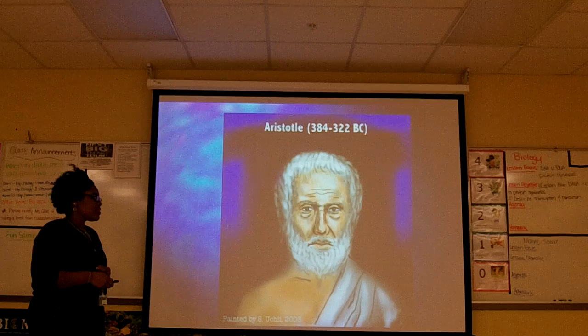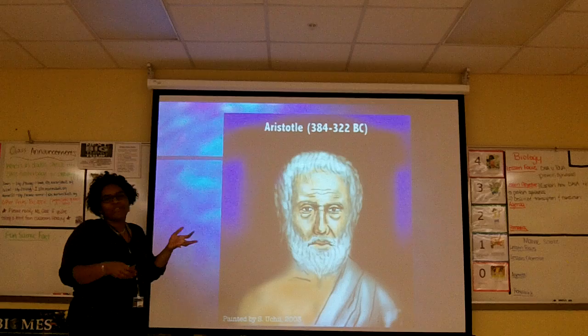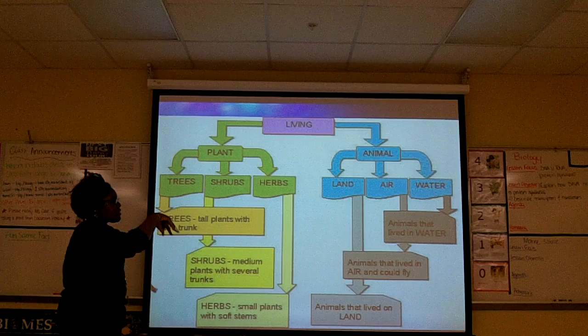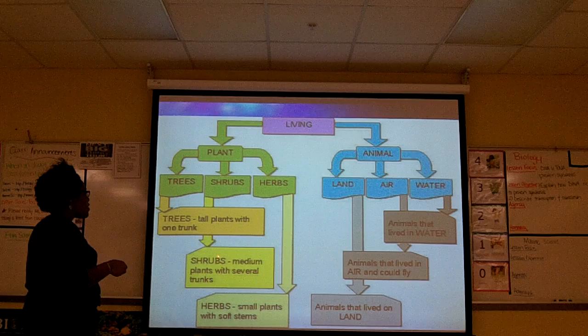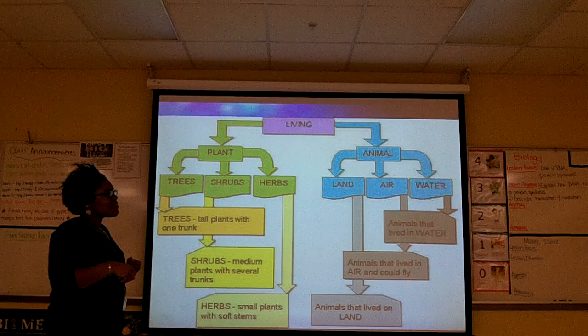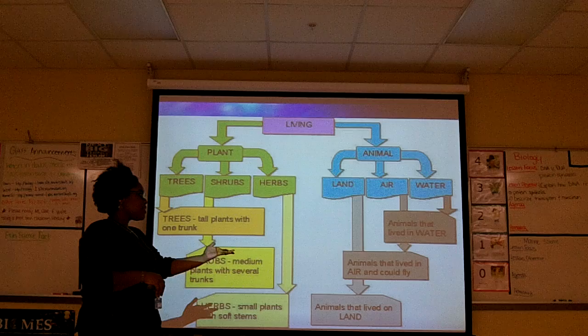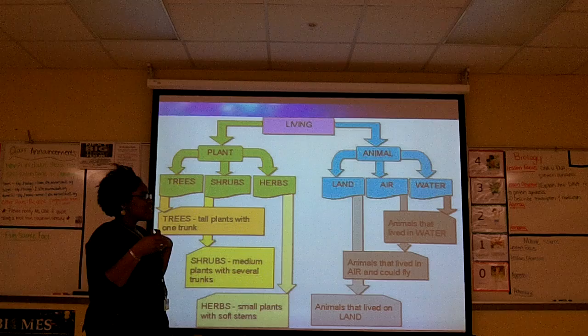Looking at Aristotle's classification: everything was 'living.' He had plants broken into trees — tall plants with one trunk — shrubs — medium plants with several trunks — and herbs, like small plants with soft stems such as oregano, thyme, or basil. For animals, he classified by where they lived: land, air, and water. So penguins, which don't fly, would have been classified as land animals.